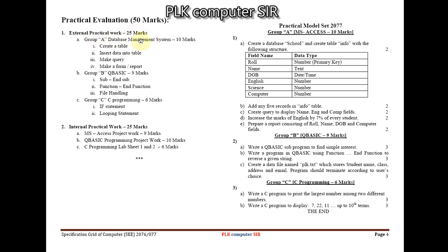For external practical, the exam has three groups. Group A is Database Management System (MS Access): 10 marks — tasks include creating a table, inserting data, making a query, form, or report. Group B is Q Basic: 3 questions × 3 marks = 9 marks — can be sub program, function, or file handling. Group C is C programming: 2 questions × 3 marks = 6 marks — one from if statement and one from looping.